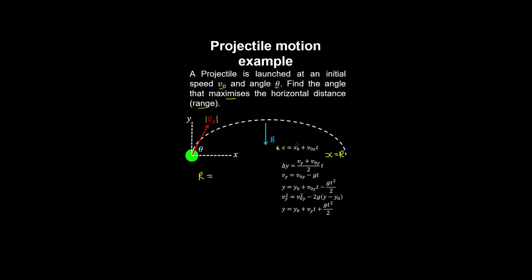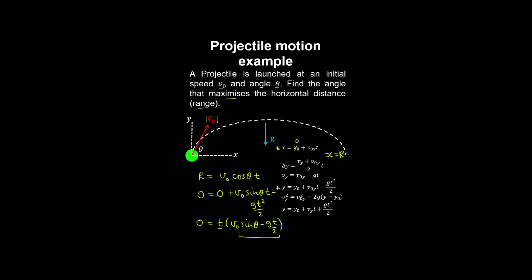The range equals the horizontal component of velocity multiplied by time. Using the vertical kinematic equation — where the final position equals the initial position plus the vertical component of velocity multiplied by t minus g t squared over two — we factor out t. This gives us the time when the projectile is at its range. Substituting for time and applying the trig identity, 2 sin theta cos theta equals sin 2 theta.